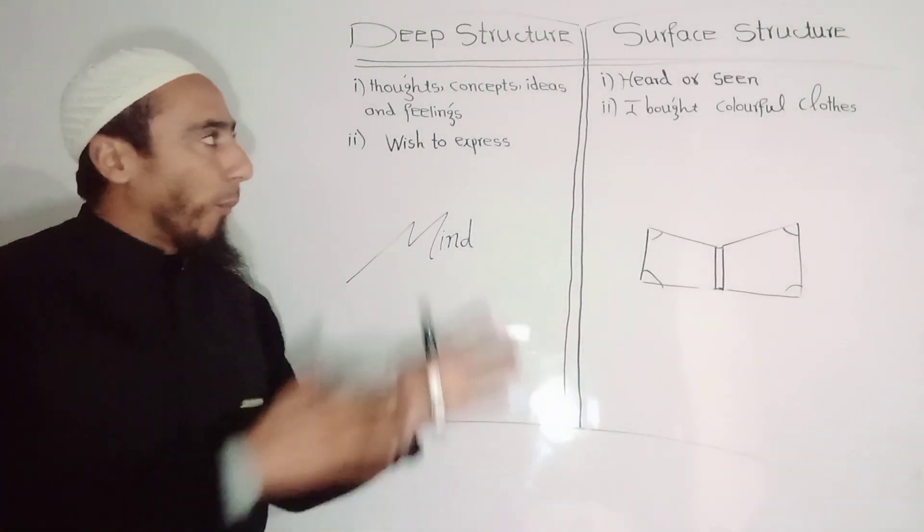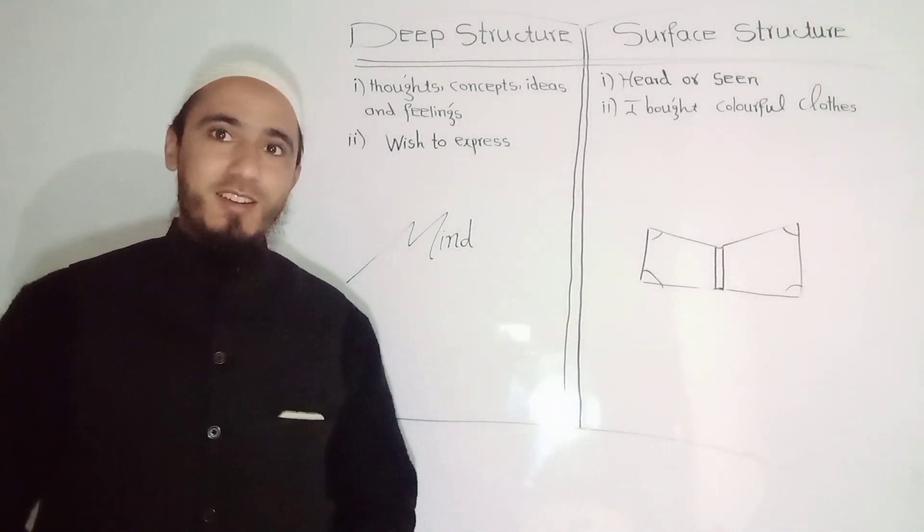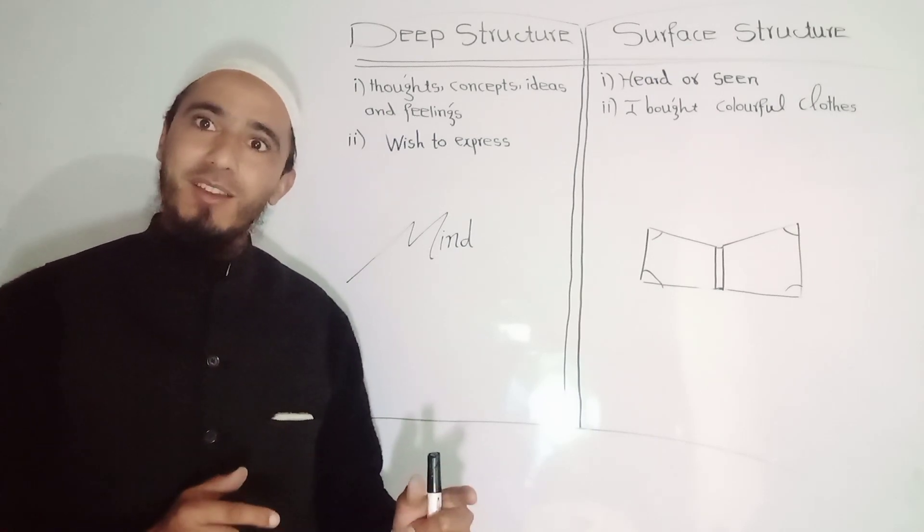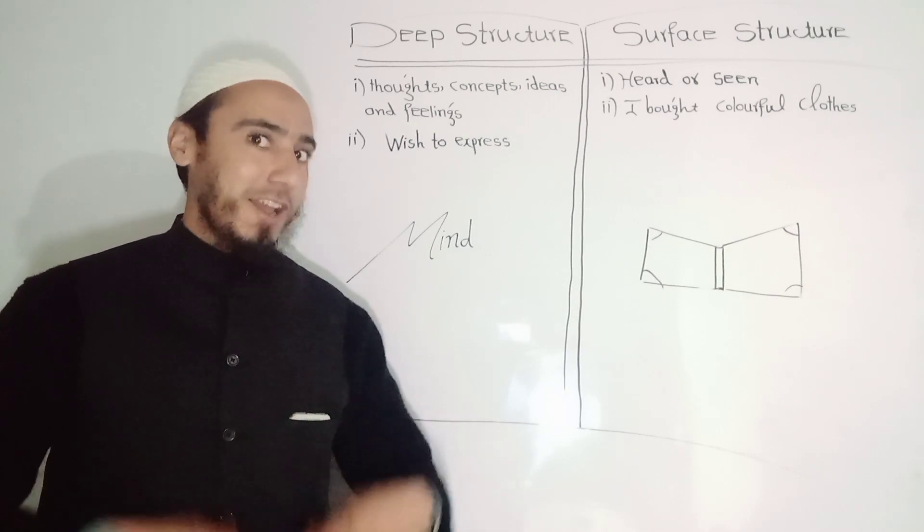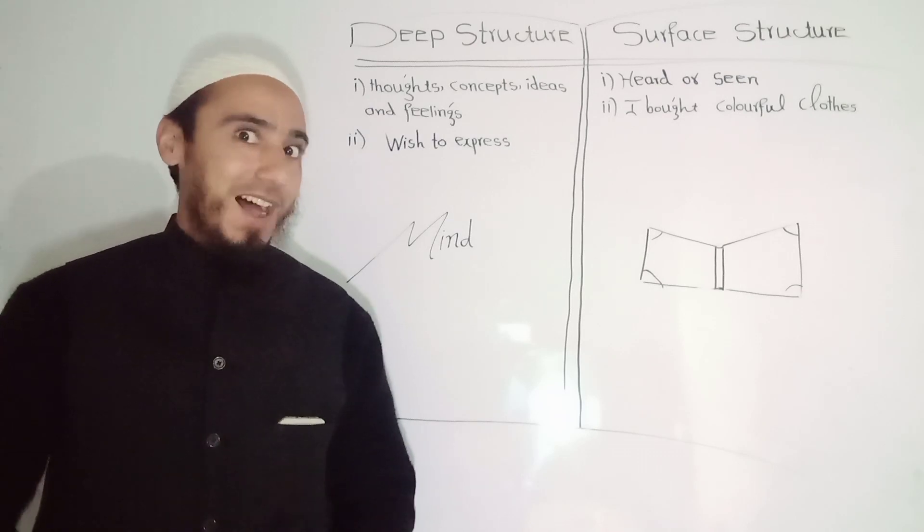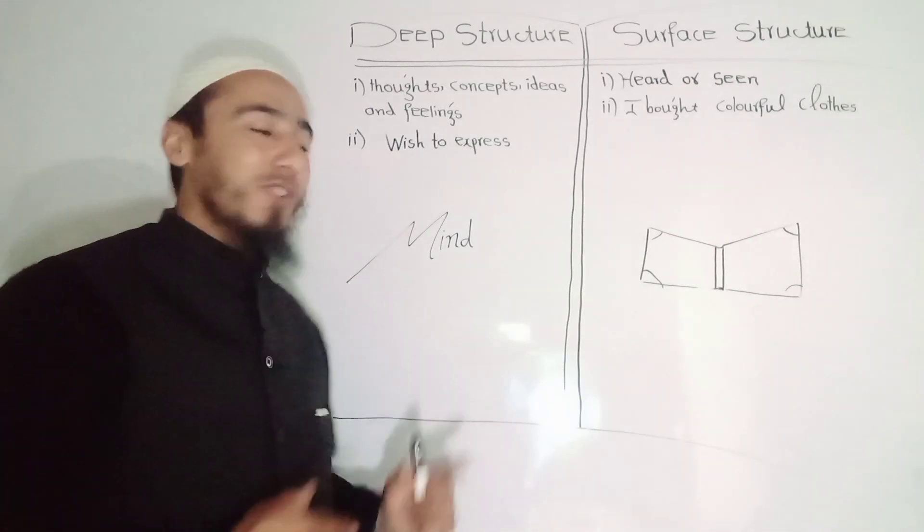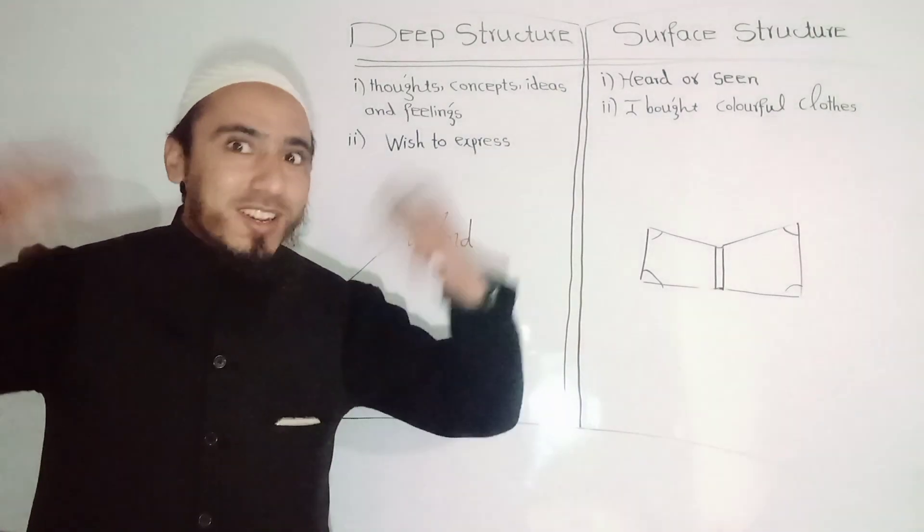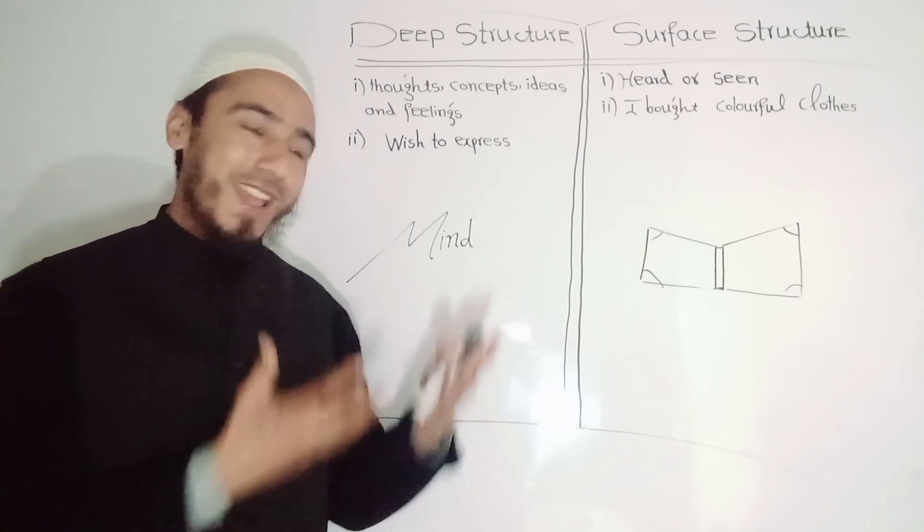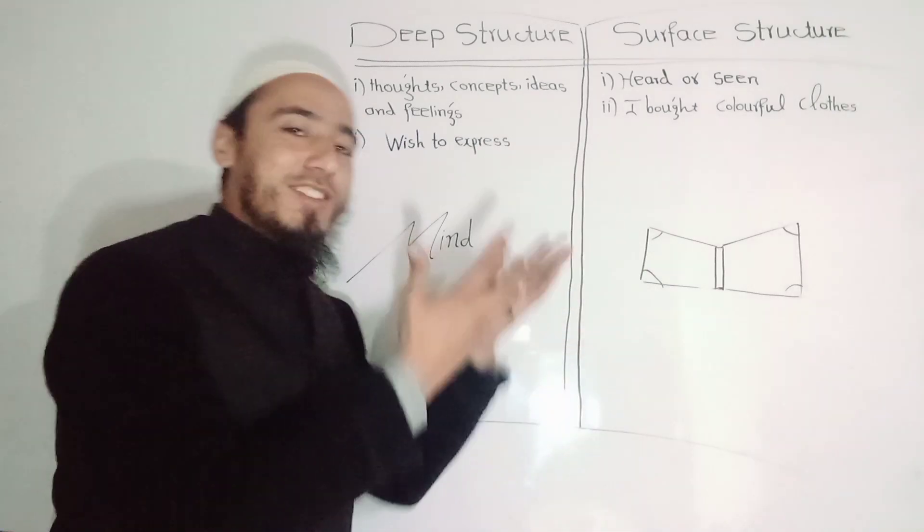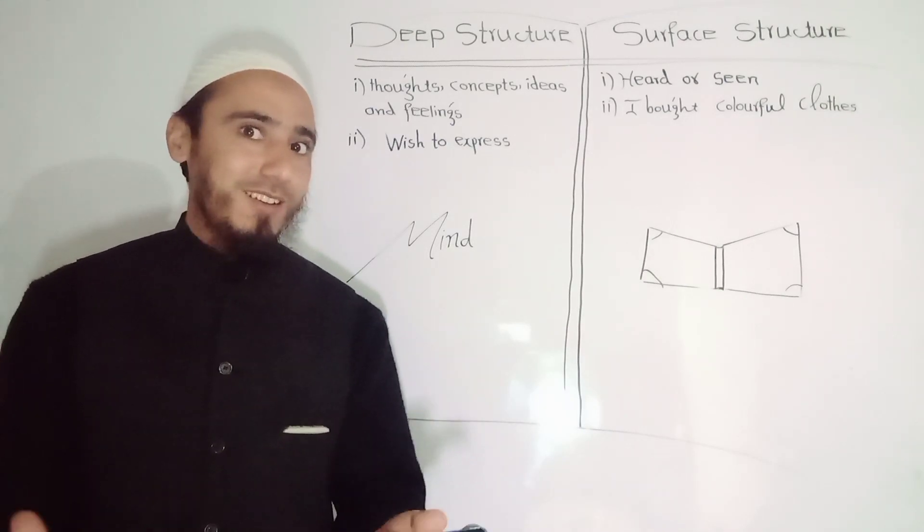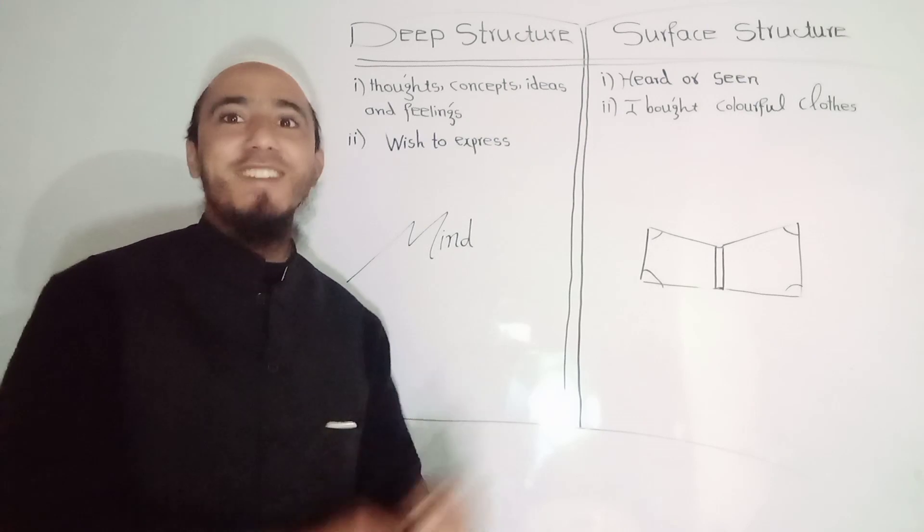On the other hand, whenever we are talking about surface structure, surface structure refers to the words and sentences which can be heard and which can be seen. Deep structure is what is in your mind, what you want to express. Surface structure means how you express those ideas, thoughts and feelings in your words and sentences.